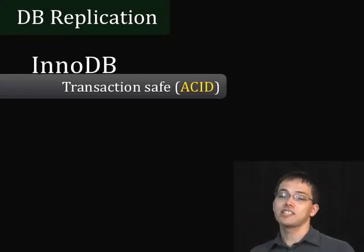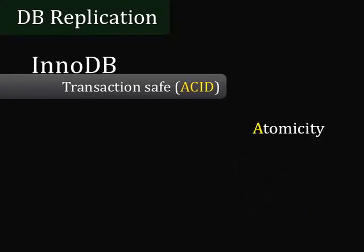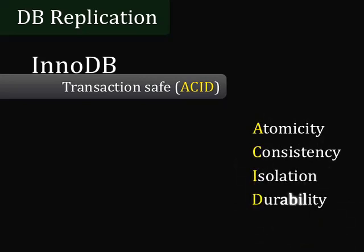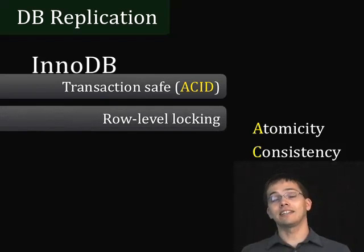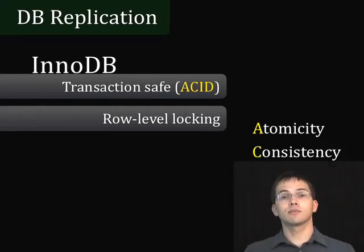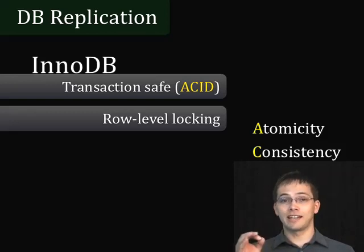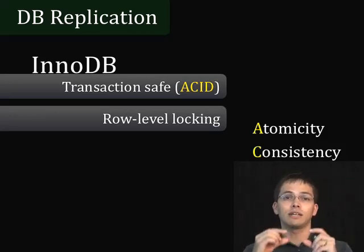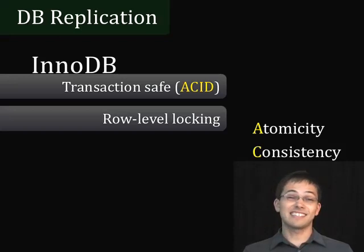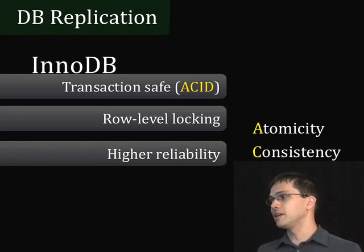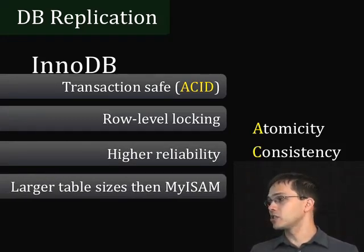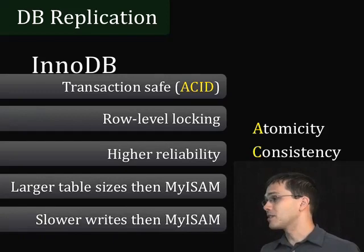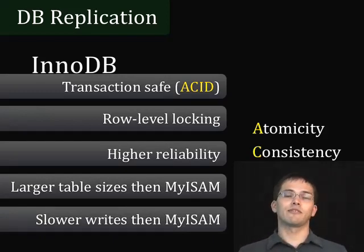InnoDB, on the other hand, is transaction safe and follows a set of principles called ACID, which stands for Atomicity, Consistency, Isolation, and Durability. InnoDB also locks at the row level rather than the table level. With MyISAM you can only do one update at a time because it locks the entire table, whereas with InnoDB you can lock at the row level so updates can happen at the same time — though that is actually a little slower, which is one of the reasons why InnoDB does updates slightly slower. InnoDB has higher reliability and larger table sizes than MyISAM, which is a disadvantage if drive space is limited, and it also has slower writes for the aforementioned reasons.